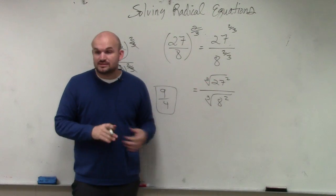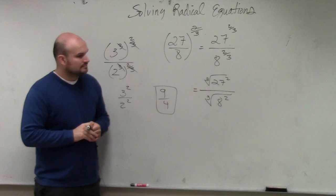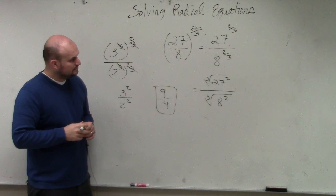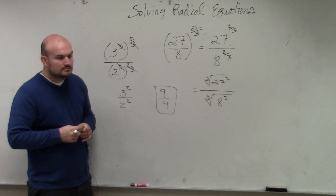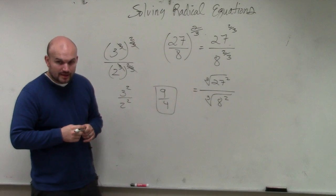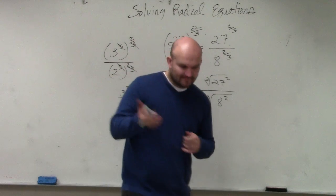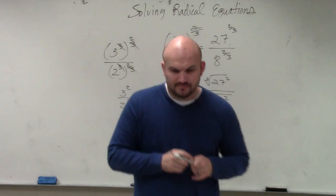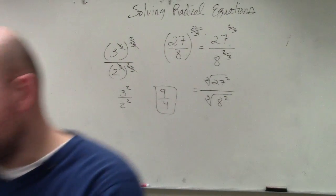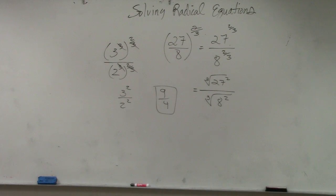This answer would have been 9. A student asks: for 27 squared, couldn't you just say 27 times 27 and then take the cube root of each 27? Yes, you could do that — so you get 3 times 3. Absolutely, that would be an easy way to do that without a calculator. Another student notes it looks easier to do the exponent way.